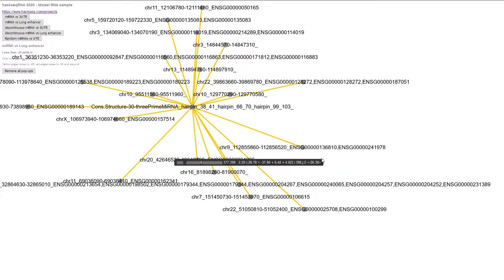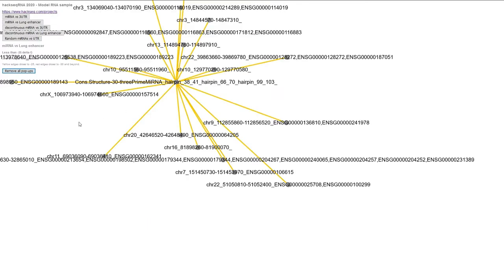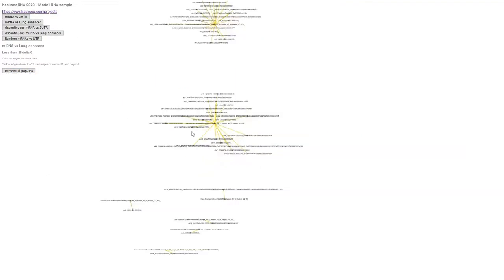This data was already filtered to below negative 25 delta G, but the coloring on the edges also indicates further beyond that negative 25.